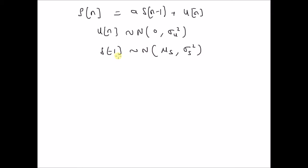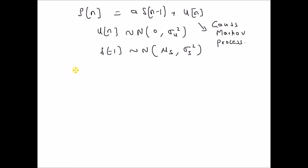Since the initial state and the error term follow respective Gaussian distributions, and the current state is a function of the previous state, this is known as a Gauss Markov process. Now let us look at the derivations of the mean and covariance of this process.